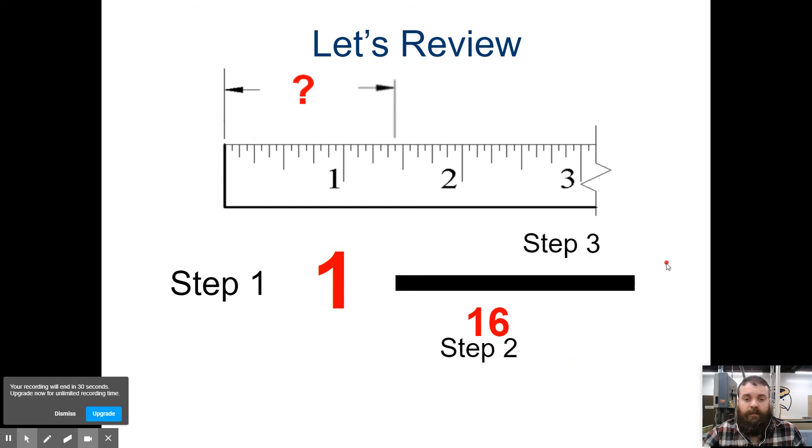Step three, we need to find our numerator. So we're going to count up to this mark. So one, two, three, four, five, six, seven. Our numerator should be 7.